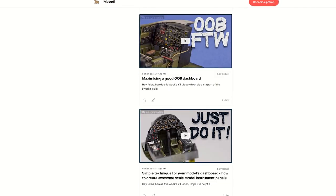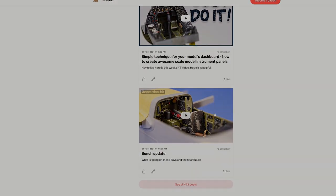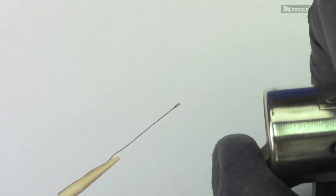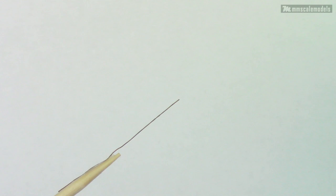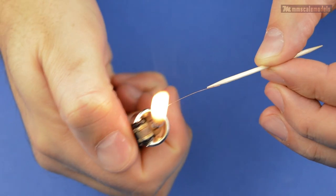And finally, let's clean up the build up, which is quite easy. Just light it up for a second. Don't hold the flame too long though, this thin copper wire melts easily.